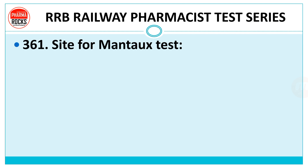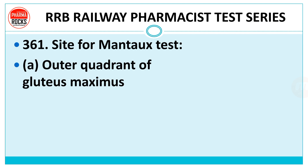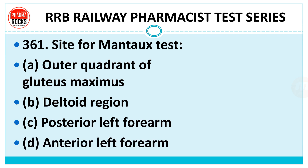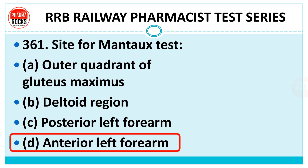Question no. 361: Site of Mantoux test. Option A: outer quadrant of gluteus maximus. Option B: deltoid region. Option C: posterior left forearm. Option D: anterior left forearm. The right answer for this question is Option D — anterior left forearm.